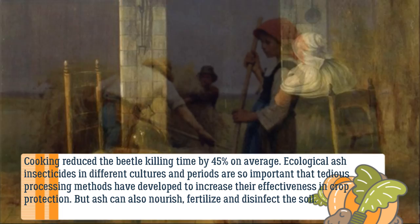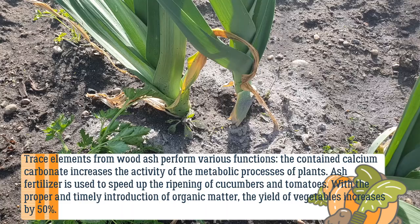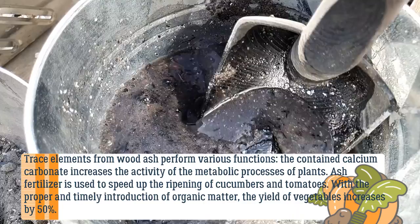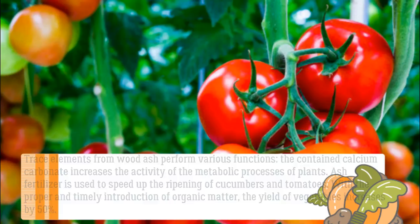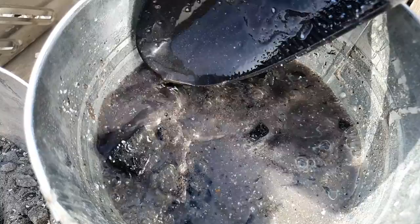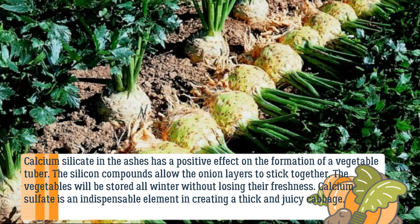Ash can also nourish, fertilize, and disinfect the soil. Trace elements from wood ash perform various functions. The contained calcium carbonate increases the activity of metabolic processes in plants. Ash fertilizer is used to speed up the ripening of cucumbers and tomatoes — with proper and timely introduction of organic matter, the yield of vegetables increases by 50%. Calcium silicate in ashes positively affects the formation of vegetable tubers and allows onion layers to stick together, keeping vegetables fresh all winter.